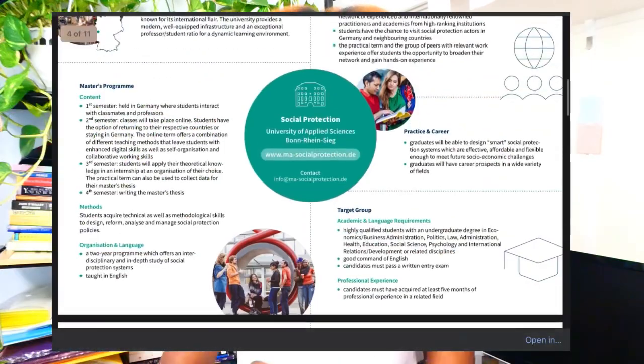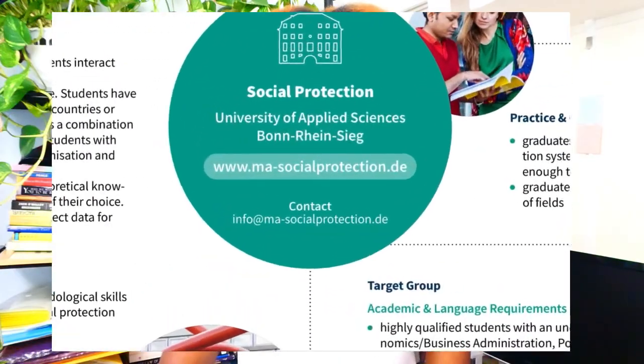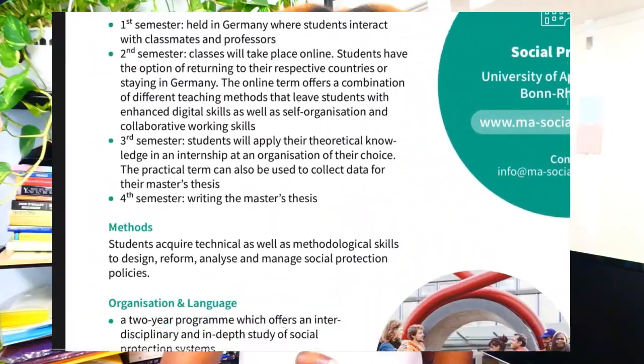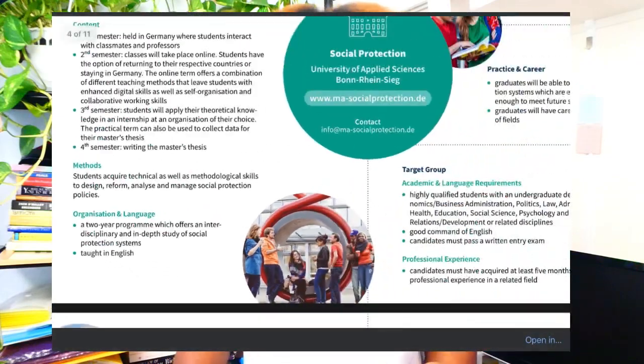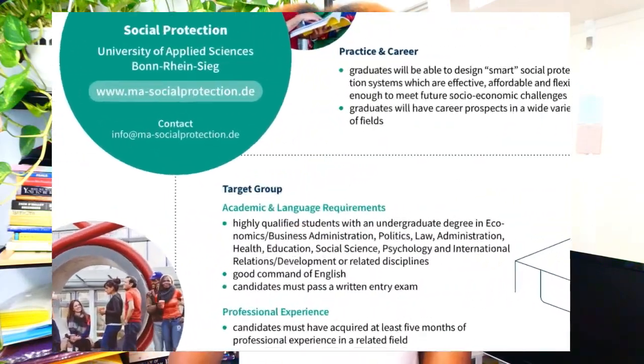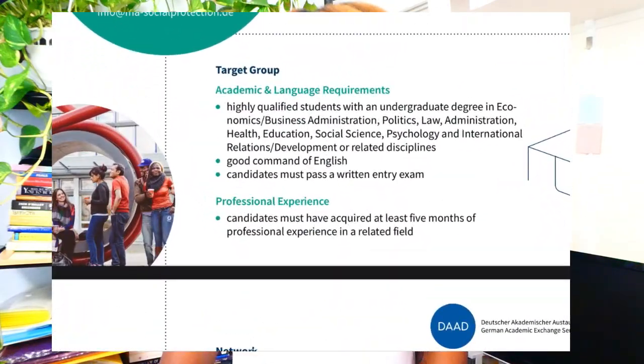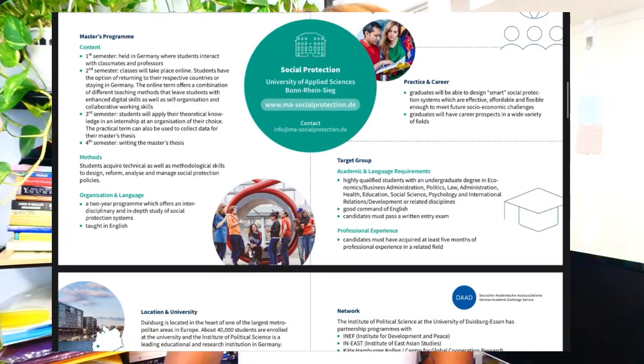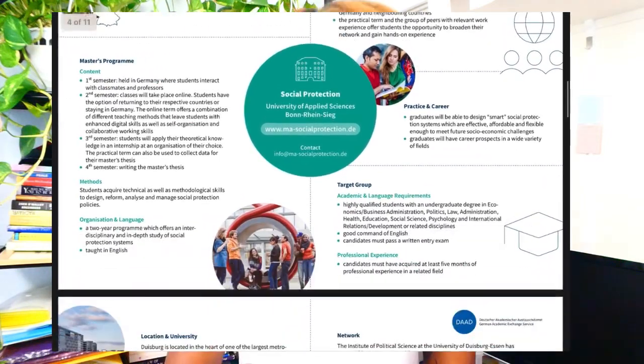Make sure you get this brochure because it goes into detail on each program. For example, the Social Protection Program tells you the master's course, methods of study, organization and language, practical career, and target group — who they are targeting. You can read more about each program here, and Development and Governance also has a link you can click to go straight to the university's website.